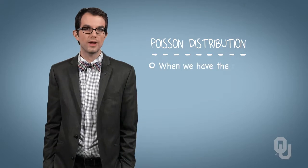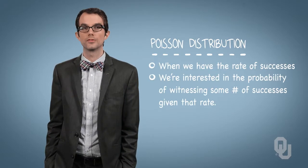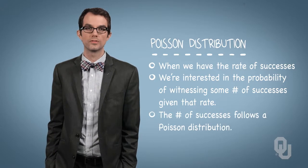The next in the line of common discrete probability distributions is called a Poisson distribution. When we have the rate of successes, and we're interested in the probability of witnessing some number of successes given that rate, that number of successes follows a Poisson distribution.